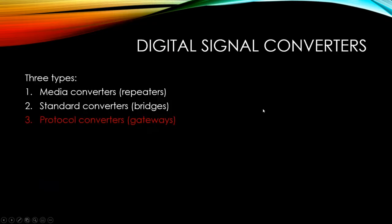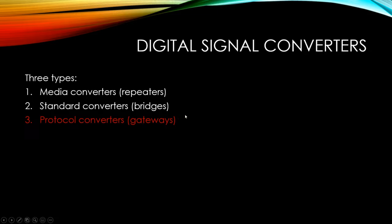That leads us to the third evolutionary step: straight digital converters. The previous slides on analog-to-analog and analog-to-digital were recently added in version 21 of the ILM — the older version started right here, which is where the meat and potatoes is for fourth year students at the top of the ladder. Three types of digital signal converters include media converters — sometimes called repeaters — standard converters — sometimes called bridges — and protocol converters — sometimes called gateways.